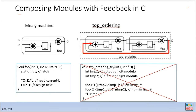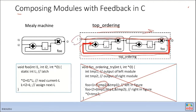Things get more complicated when you have a feedback path. With a feedback path you can no longer simply evaluate based on the previous dependency order. If you evaluate in the original forward order, then when you reach the second function, temp2 hasn't been updated yet — because temp2 depends on the feedback path, which is combinational logic. So the C code and the actual hardware result won't match.